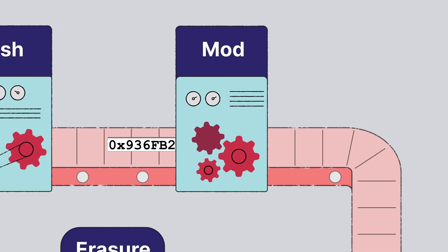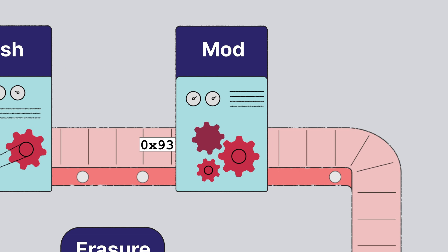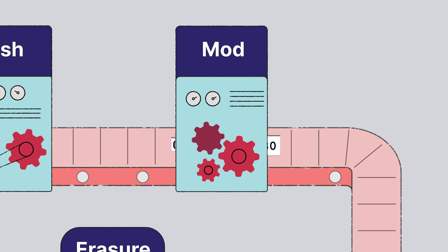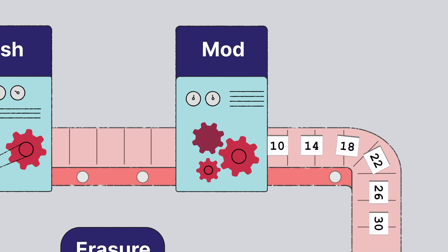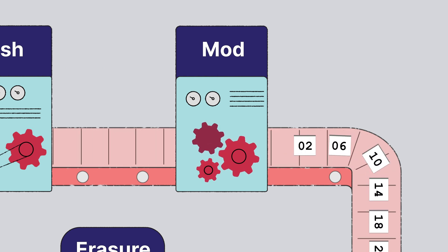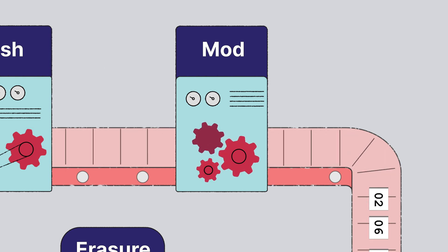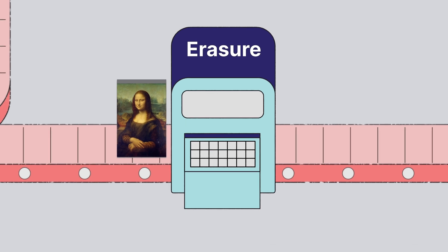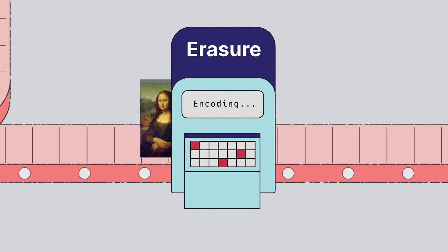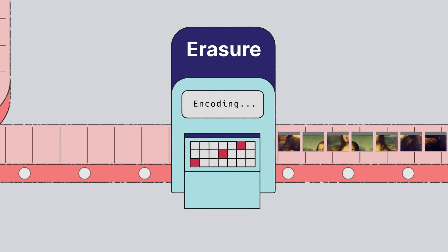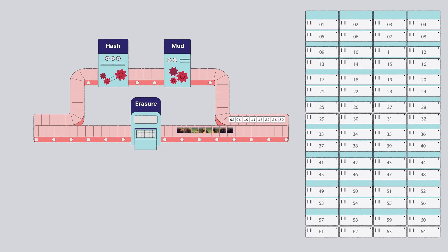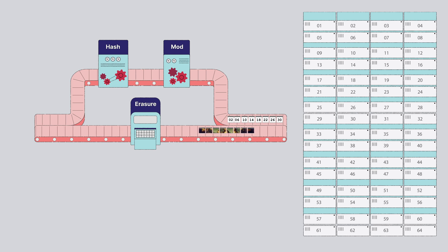Next, the hash value is used with a modulus function to determine the specific set of drives on which the data will eventually be stored. Separately, the object data is processed by an erasure code engine that breaks the object into its respective data and parity blocks.